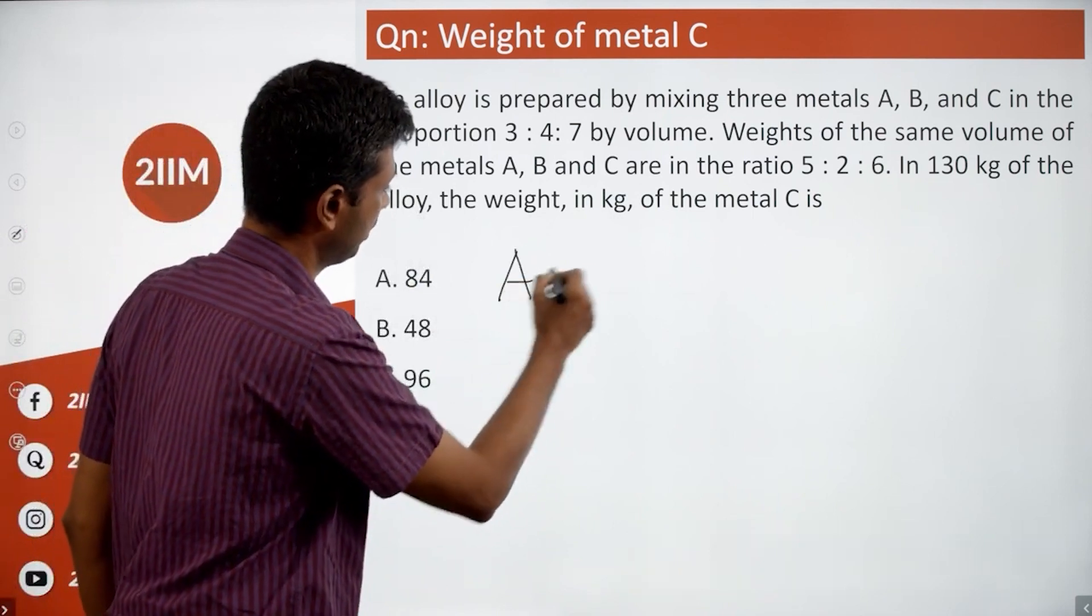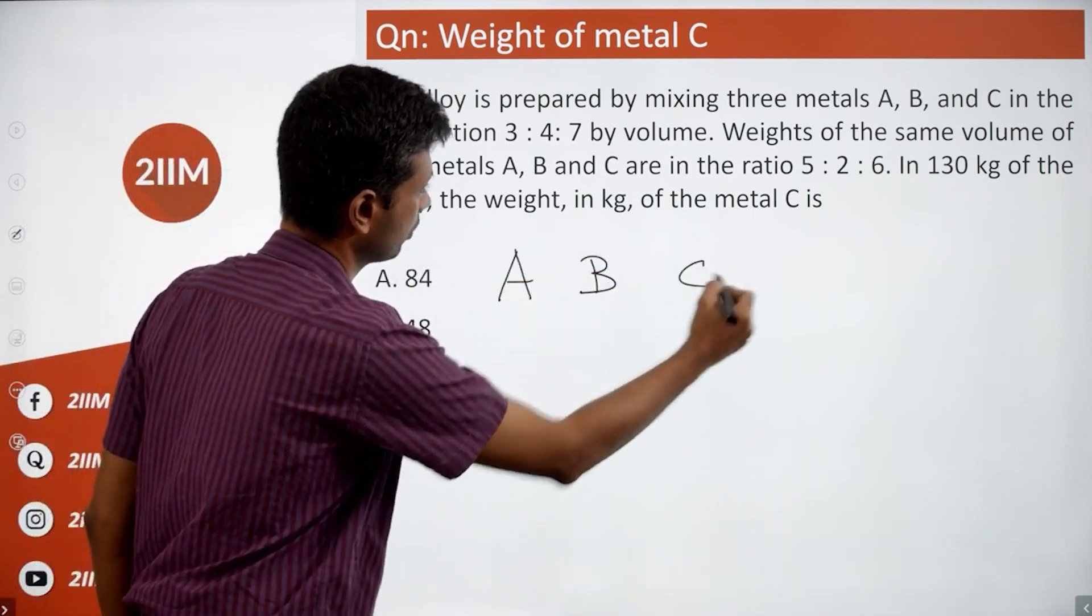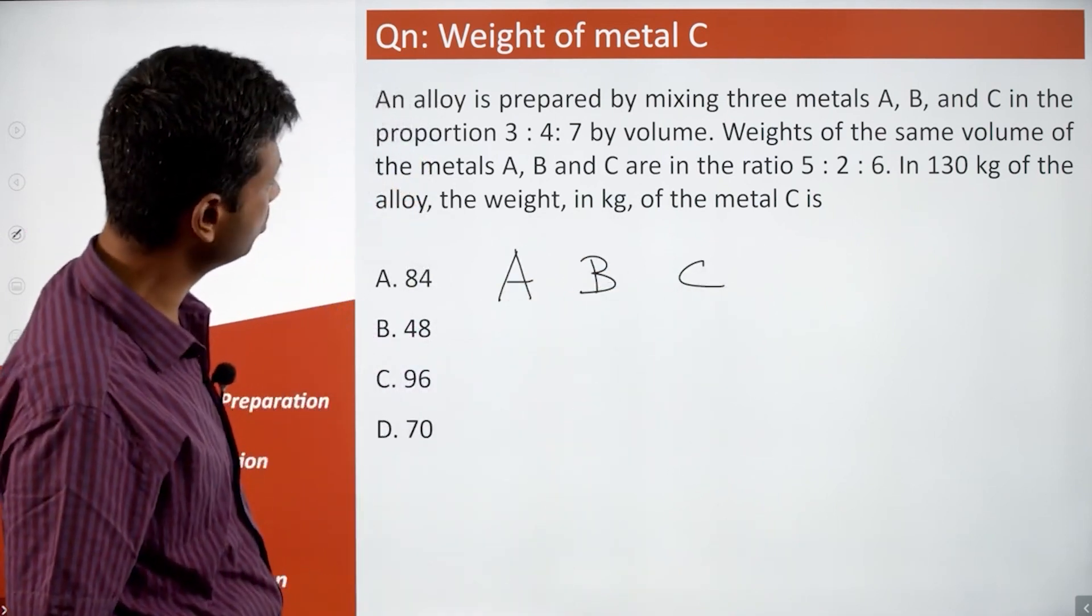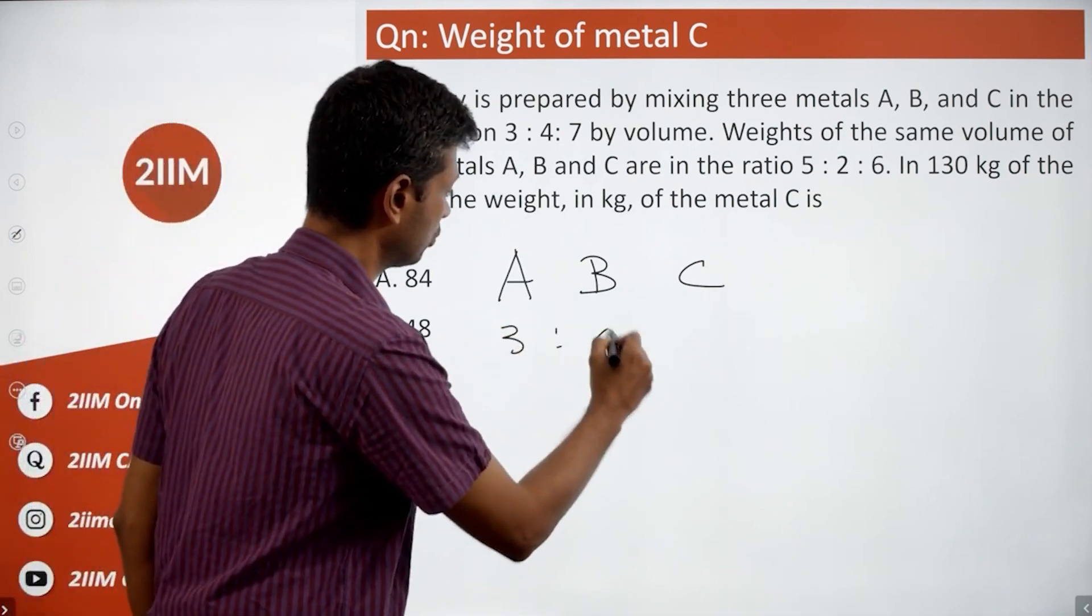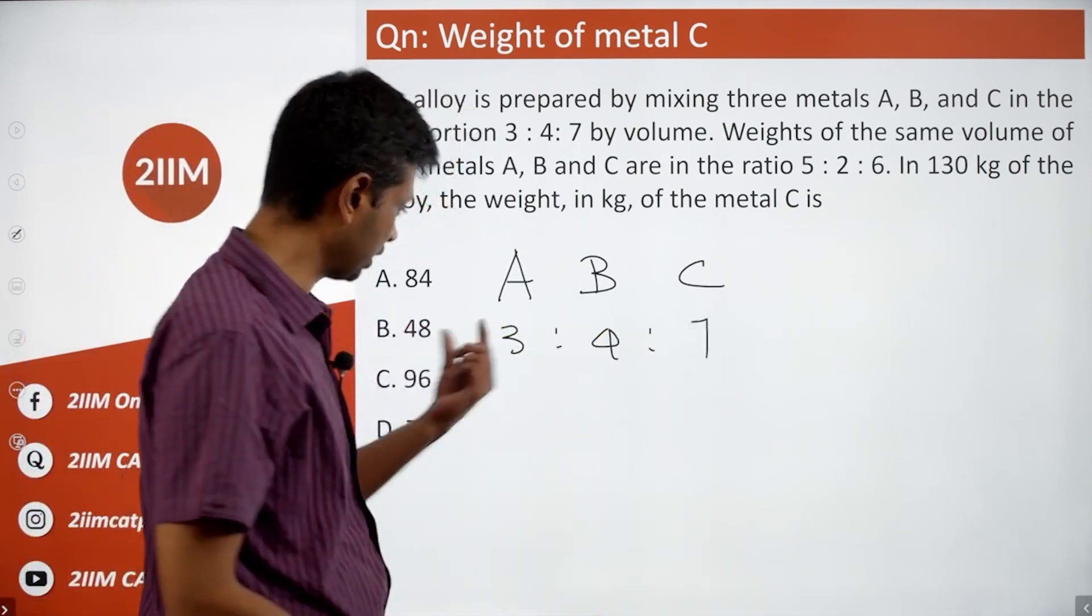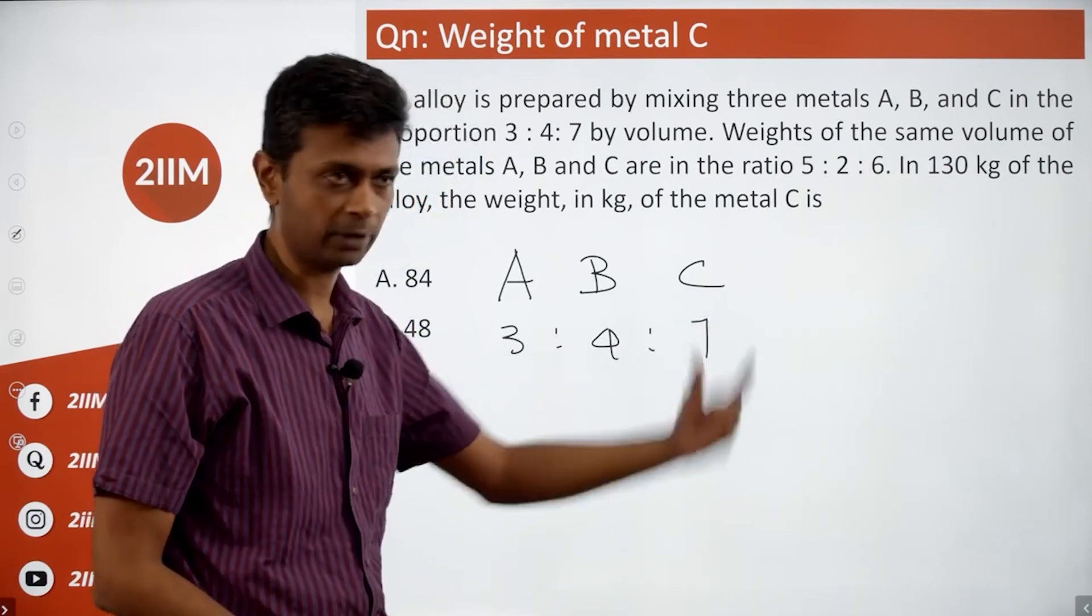There are three metals A, B and C. This has volume in the ratio 3:4:7. So if you have 14 liters, then there are 3 liters of this, 4 liters of this and 7 liters of that.